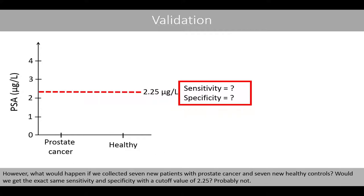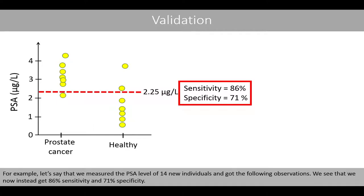However, what would happen if we collected seven new patients with prostate cancer and seven new healthy controls? Would we get the exact same sensitivity and specificity with a cut-off value of 2.25? Probably not. For example, if we measured the PSA level of 14 new individuals, we might instead get 86% sensitivity and 71% specificity.